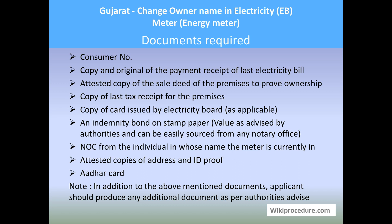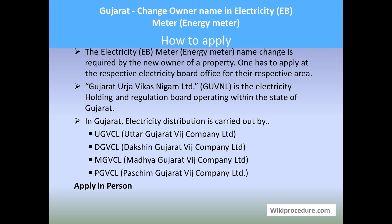A no-objection certificate from the individual in whose name the electricity connection is currently held, and attested copies of address and ID proof. Note: in addition to the above-mentioned documents, the applicant should produce any additional documents as per the authorities' advice.